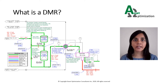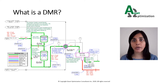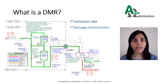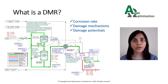A DMR is a detailed and systematic review of each pressure equipment and/or piping circuit component. It is typically performed at a PFD level and is performed to identify the expected corrosion rate, damage mechanisms, potentials for damage to occur, and the type of damage that's expected.